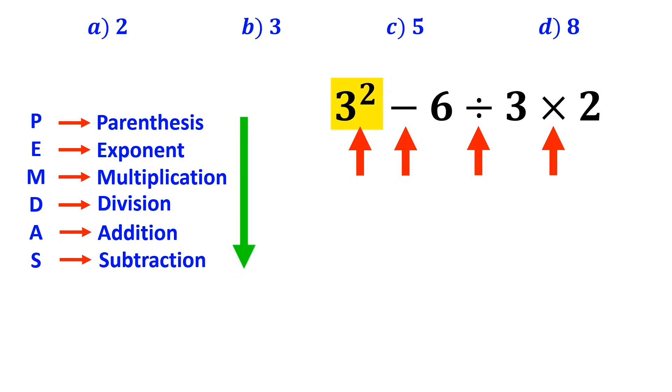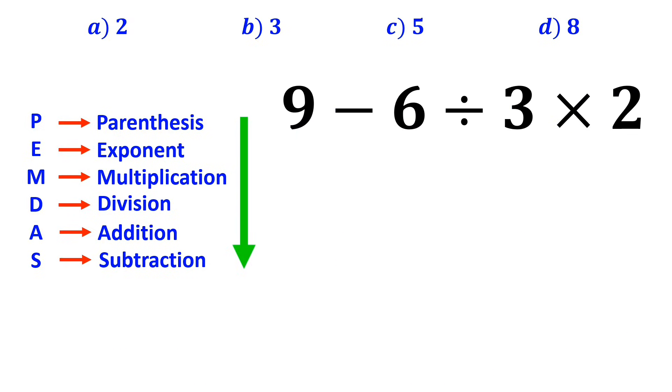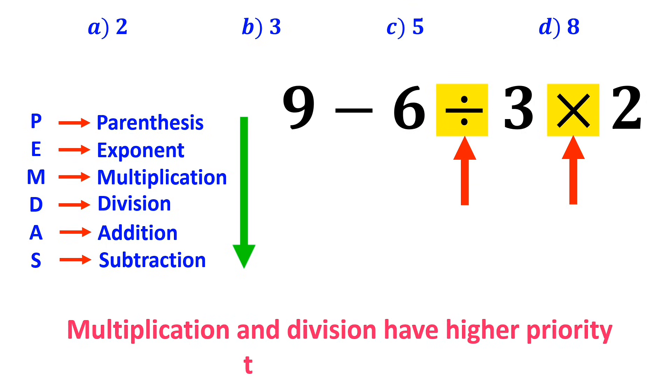We should start with the exponent, because in this expression, exponent has a higher priority than the other operations. So, this expression simplifies to 9 minus 6 divided by 3 times 2. In the next step, we need to handle the division and multiplication, since multiplication and division have higher priority than subtraction.